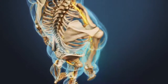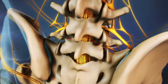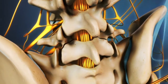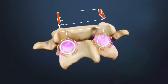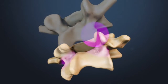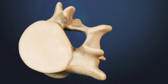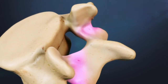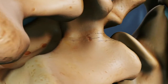Lumbar spondylolysis is a condition in the lower back where there is a defect or fracture in the part of the vertebra known as the pars interarticularis. The pars interarticularis, also known as the isthmus, is a segment of bone that connects the facet joints at the back of the spine. It is a small, thin part of the lamina that has a poor blood supply, which makes it susceptible to stress fractures.